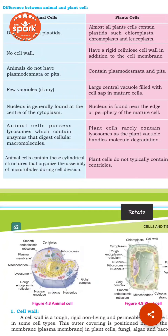In animal cells, the nucleus is generally found at the center of the cytoplasm. In plant cells, because of the large central vacuole, the nucleus is found near the edges of the cell rather than at the center.